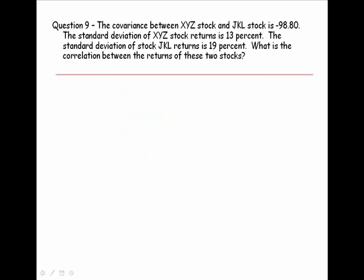The next question, number nine: the covariance between XYZ stock and JKL stock is negative 98.8. The standard deviation of XYZ stock is 13 percent. The standard deviation of the returns of JKL stock is 19 percent. What is the correlation between the returns of these two stocks? Let's start with our formula again. The covariance between assets XYZ and JKL is equal to the correlation between the two assets times their standard deviations.